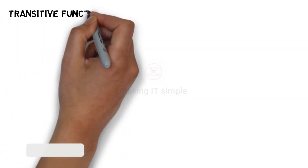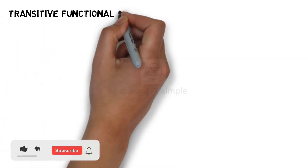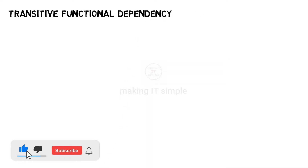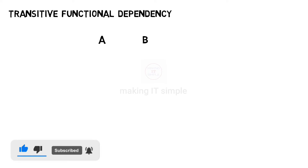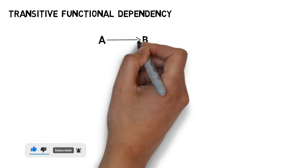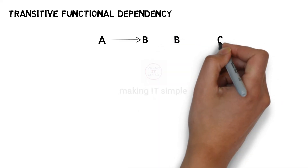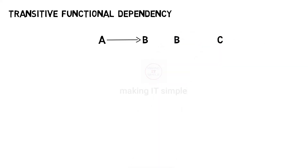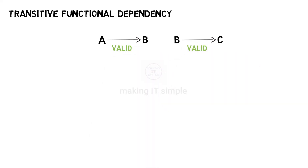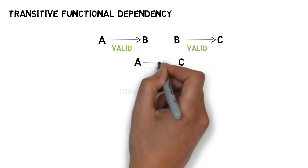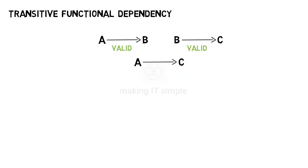Next we have Transitive Functional Dependency. If there is a Functional Dependency A determines B, and another Functional Dependency B determines C, and both are valid, then by the rule of transitivity, A can determine C.